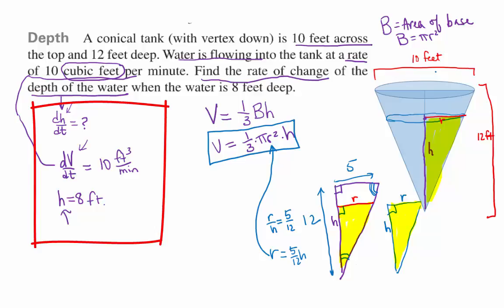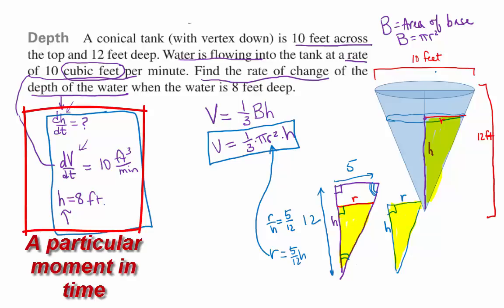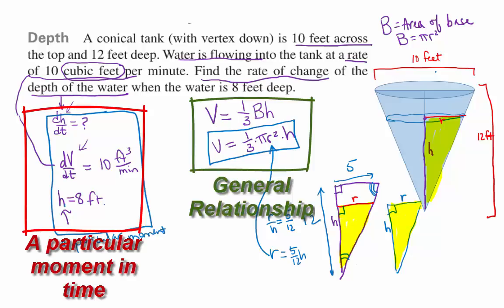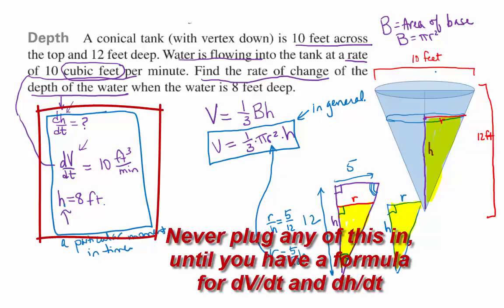We don't ever use any of this until we have a formula relating the rate and the time. This is at a particular moment in time, and this is a relationship in general. We cannot differentiate if we plug 8 in for H and then differentiate. Yeah, you'll get 0 exactly. Because that's at that moment in time, it's constant. So we never plug any of that information in until we have our relationship between DV/DT and DH/DT.